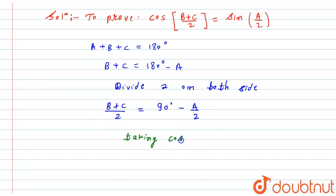So what I will get here is cos((B+C)/2) will be equal to cos(90° - A/2).